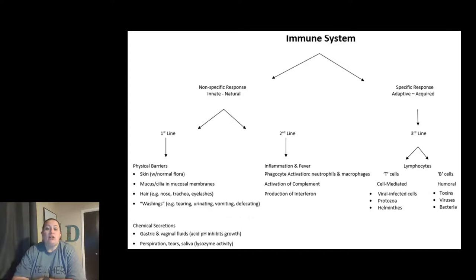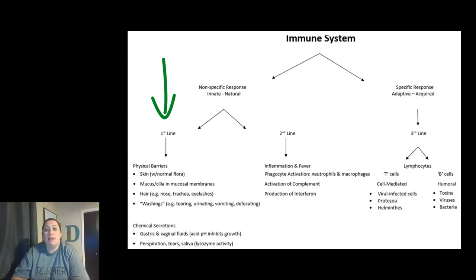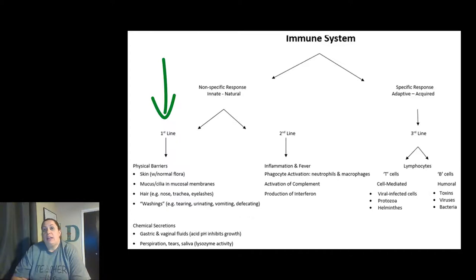The first line of defense consists of your physical barriers. This includes your skin as well as the normal flora on your skin — the normal bacteria — which helps protect you by out-competing invaders. We also have the mucus and the cilia in the mucous membranes; this mucus is there to help trap and filter invaders, as is the cilia, to help act as a barrier so things can't necessarily gain access into your body. We also have hair in a number of areas to help trap as well.